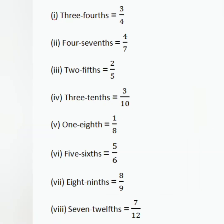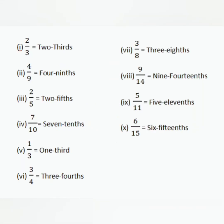Now, how do we write a fraction from a fractional number? For example, 'three fourth' — three is our numerator and 'fourth' is our denominator. We draw a line (slash) between numerator and denominator, and read it as 'three upon four.' Similarly, we write fractions for all other numbers.